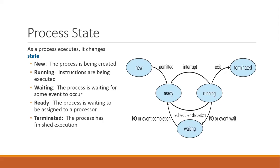This figure shows the interaction between various stages — how a process progresses from one state to another. Initially, when a process is being created, it is in the new state. After the process has been allocated memory, it will come into the ready state, which means the process is now residing in main memory and waiting for the microprocessor for execution. From the ready state, the process will move to the running state. And from the running state, during execution, there is a possibility that the process has finished its execution, in which case it will move to the terminated state.